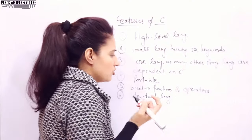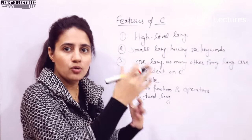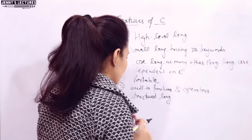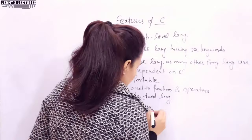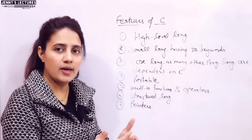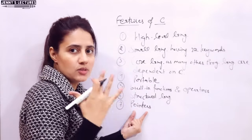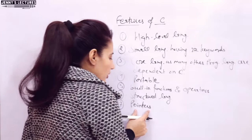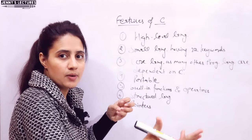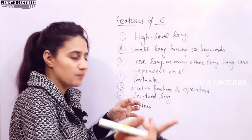The next feature is that C is a structured language. The code can be arranged and organized into one or more functions, which is why it is known as a structured language. C also supports the use of pointers, so you can directly access and interact with memory. Pointers store the address of a variable, and using those pointers you can directly access the memory address of that variable. We will discuss pointers in more detail when we write programs.